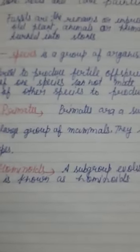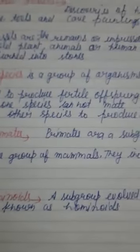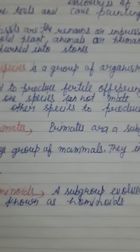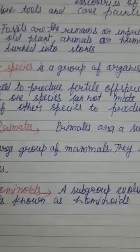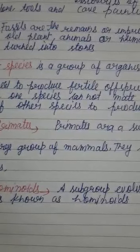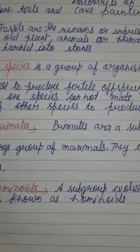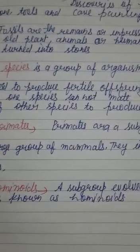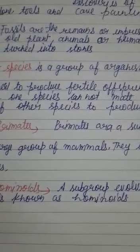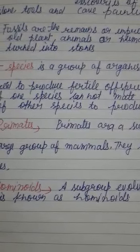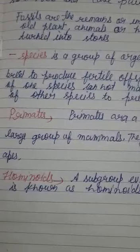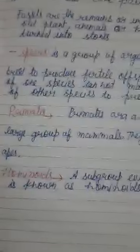To, is tarah ke jo fossils hamare available hue hain, unse hamare is samay ke itihaas ke baare mein jaankaari milti hai — yeh praag-itihaasik kaal hai, kyunki iske hamare paas written evidences nahi milti. Itihaas kya hai? Jab se hamare paas maanav ki written evidences milni shuru ho jaati hain, that is called history.